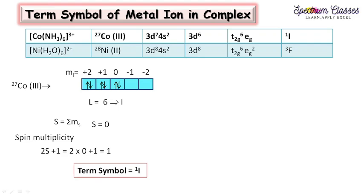Cobalt is element 27 (d7) and nickel is element 28 (d8 4s2). For Co³⁺, removing three electrons — two from 4s and one from 3d — gives 3d6. NH₃ is a nitrogen-donor strong field ligand, so electrons pair first: six electrons fill the t2g orbitals (1–6), and the eg orbitals remain empty. Calculating orbital angular momentum: +2+2+1+0+0 gives L = 5... actually summing: 4+2+0 = 6, corresponding to the I term. With zero unpaired electrons, the spin multiplicity is 1, giving the term symbol ¹I.